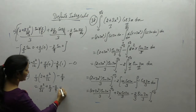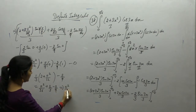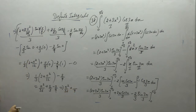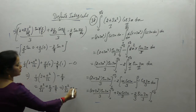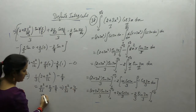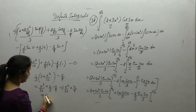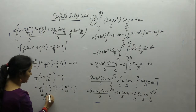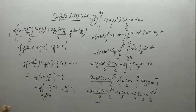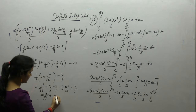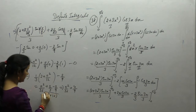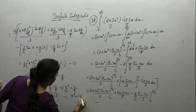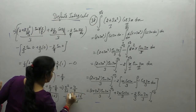Taking the LCM: π²/36 — LCM of 9 and 6 gives denominator 36 — 9 times 2 is 18, 6 times 2 is 12... combining: 6 minus 2 is 4. Final answer: (π² + 16) / 36.